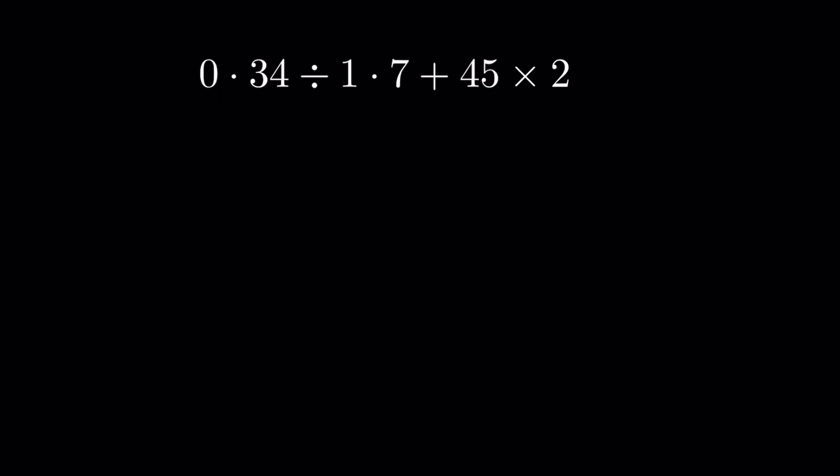First we need to do this division. Now 0.34 divided by 1.7 - this is a division of decimal numbers. To simplify it, first divide the numbers simply and forget that there is a decimal.